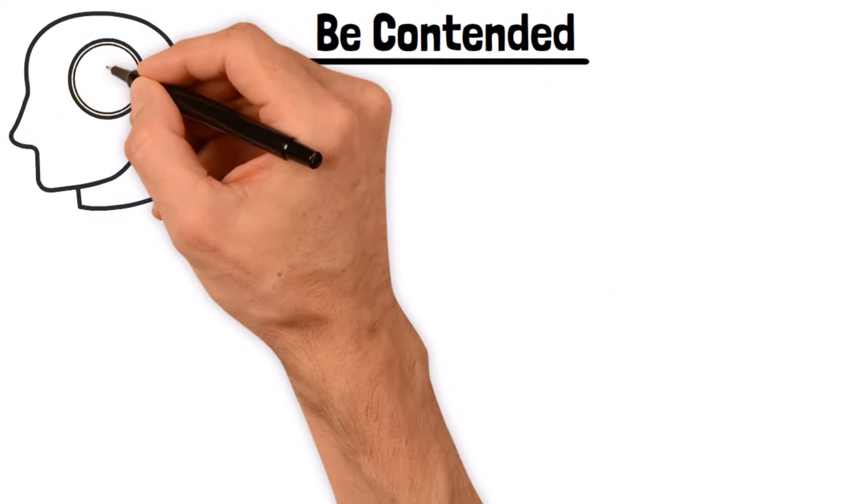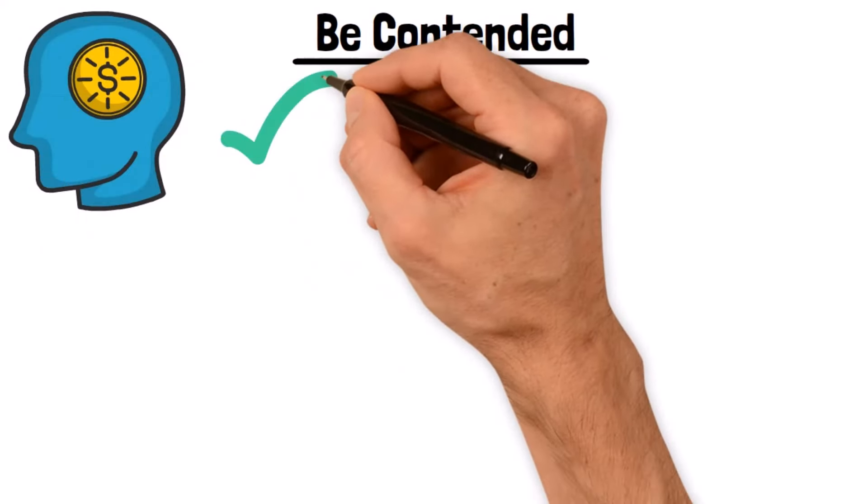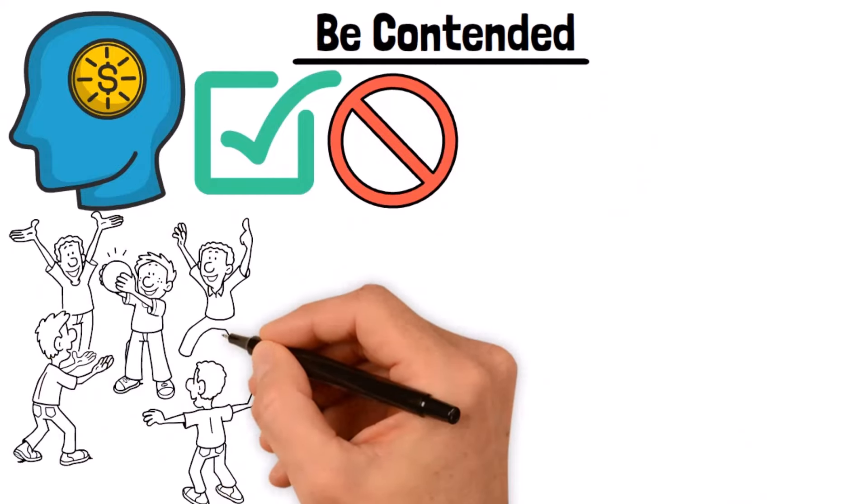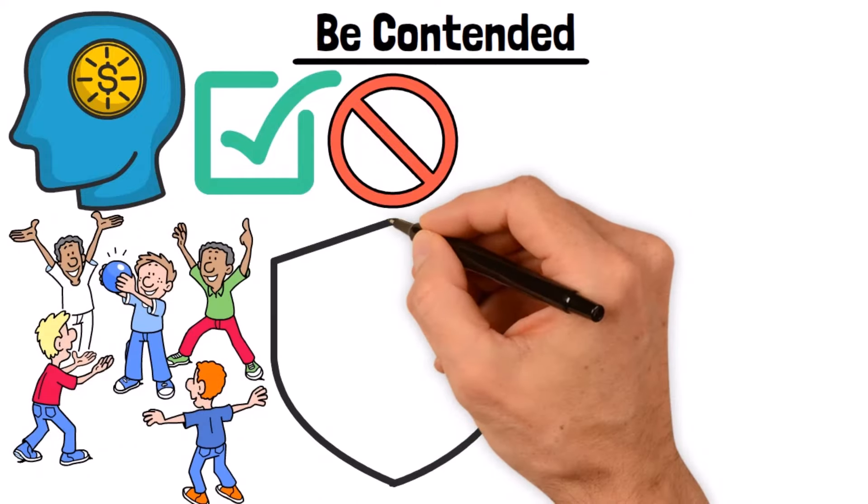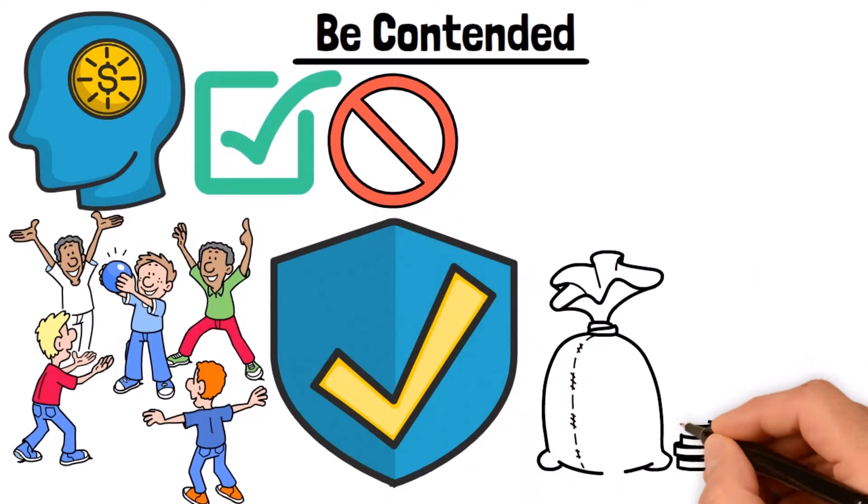Be contented. Contentment is a state of mind characterized by satisfaction and acceptance of one's current circumstances without constantly yearning for more. It's about finding joy and gratitude in what you already have, rather than constantly chasing after the next big thing. This step will help you in several ways change your finances in 2024.